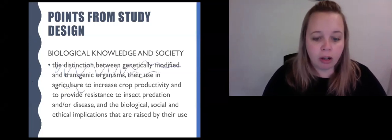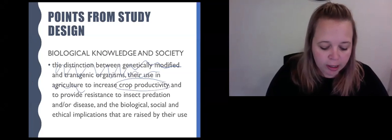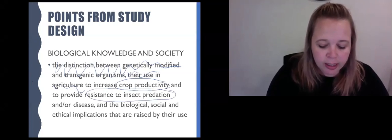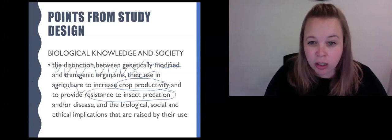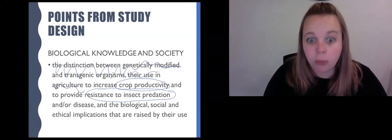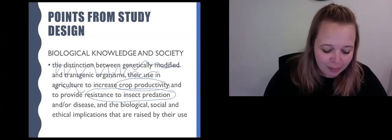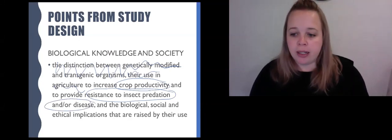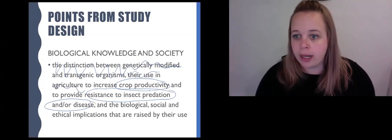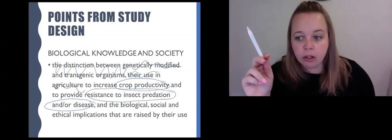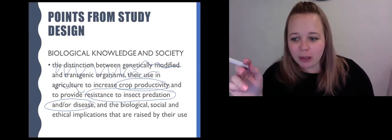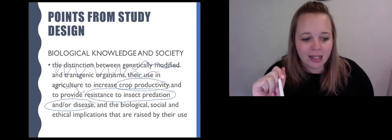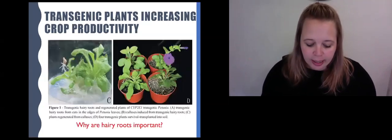We've done the distinction between genetically modified and transgenic. We've done their use in agriculture. So now we're going to do crop productivity, how we increase that, how we provide resistance to insects and insect predation, and also resistance to disease. So there are three topics and they're the three subheadings on your page: transgenic plants increasing crop productivity, providing pest resistance, and providing disease resistance.